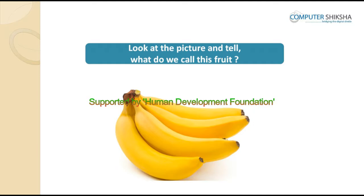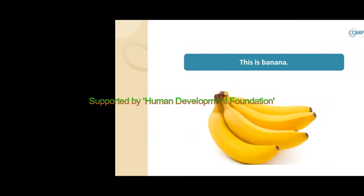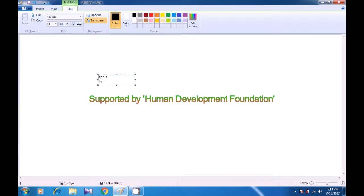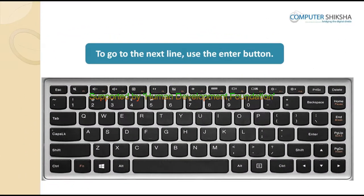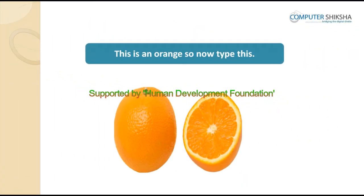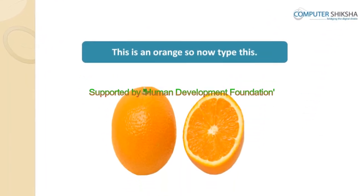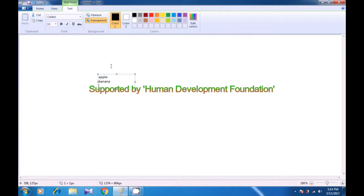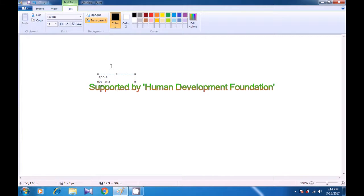Look at the next picture and tell what it is called. Go to a new line and write banana. We are now on the new line and we will type the next fruit's name, banana. Then go to a new line using the Enter key. What is the next picture about? This is a picture of an orange. So type orange in a new line. Once we have typed banana, use the Enter key and type the next word, orange.